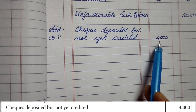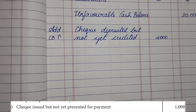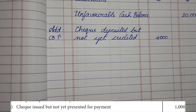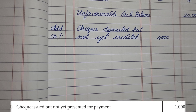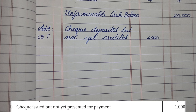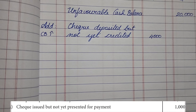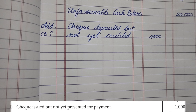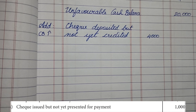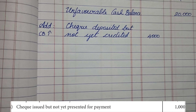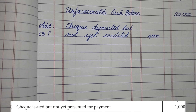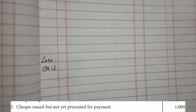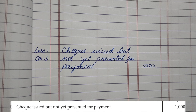Next is check issued but not yet presented for payment. Issued means you are paying someone, so the cashier records it on the payment side of the cash book, causing the cash book balance to decrease. Since the person to whom we issued the check has not yet gone to the bank and presented it for payment, the passbook still holds that money — so the passbook is increasing while the cash book is decreasing. Therefore we put this 1,000 in the Less category.